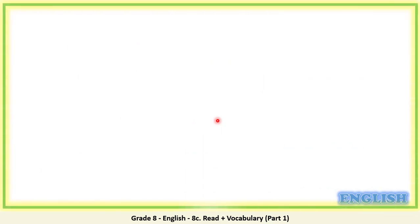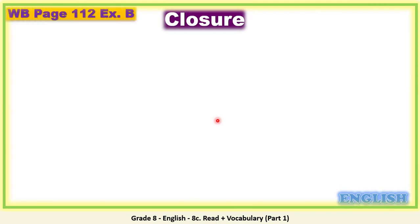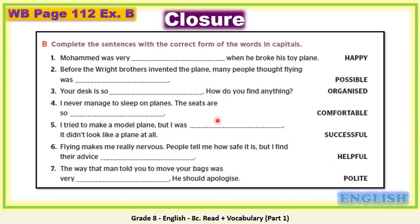Our closure today is an easy exercise on page 112 in your workbook. Please open your workbook, page 112, exercise B. In this exercise you have to complete the sentences with the correct form of the words in capitals. You have five minutes, and when you finish, please play the video again to check your answers.